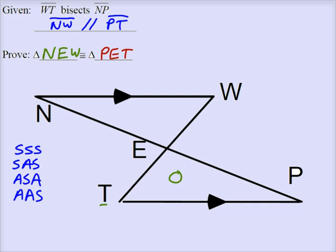Let's take a look at this given statement, the fact that WT bisects NP. So WT is doing the bisecting, but NP is being bisected. NP refers to this long segment, and we know that that segment is bisected, or in other words, it's cut into two equal parts. And WT is doing that cutting.